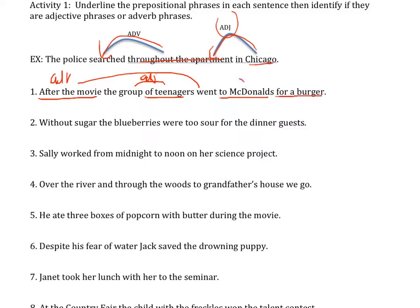Where'd they go? To McDonald's — adverb, modifying the verb. Why'd they go to McDonald's? For a burger — they went for a burger, another adverb. So again: adverb, adjective, adverb, adjective, adverb, adverb.